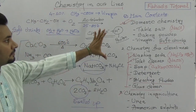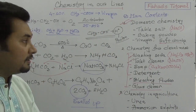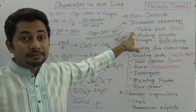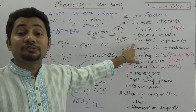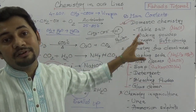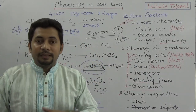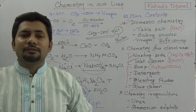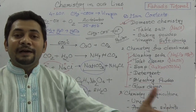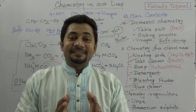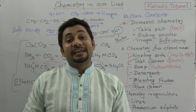So you see the domestic chemistry part I just explained: number one is table salt, number two is baking powder, number three is vinegar, and number four is soft drinks. This chapter is very very interesting, and I am saying it again. When we study it, try to write all these reactions and practice them.